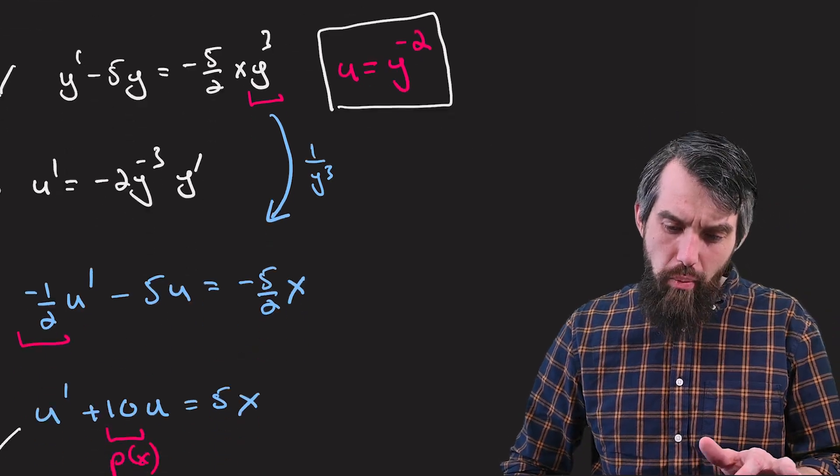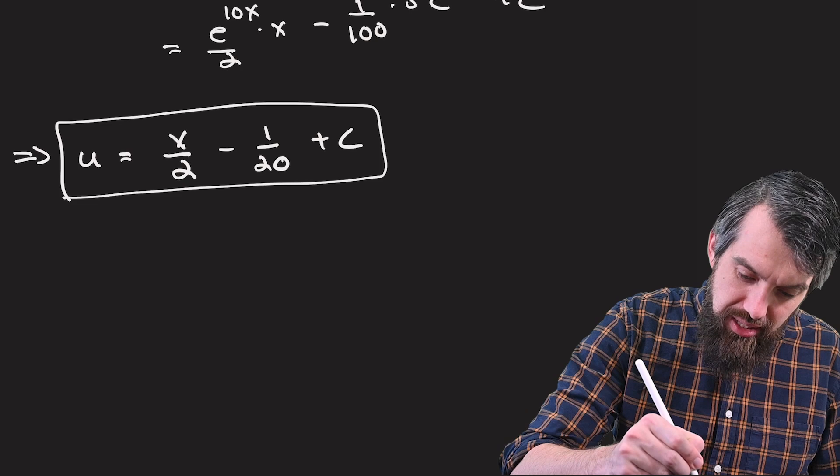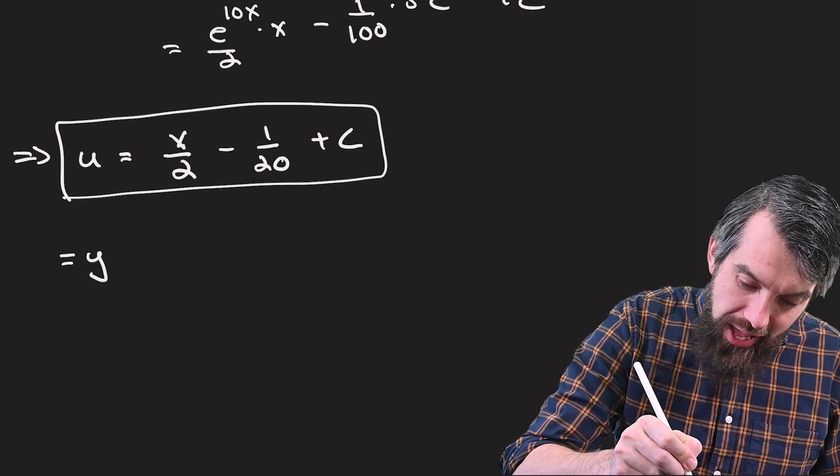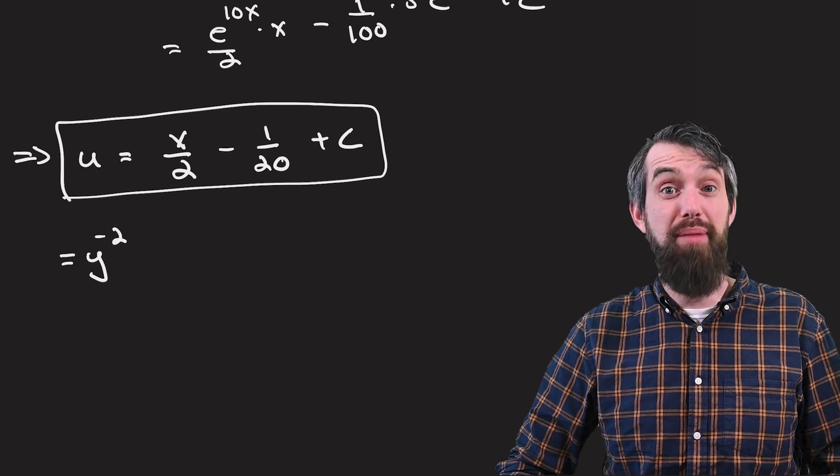So let me go back down, and this expression that I have down here for u, this is the same thing as y to the minus 2. So I'm entirely fine leaving it implicitly, just like this.